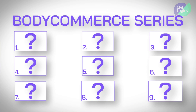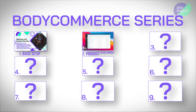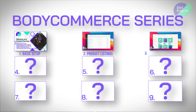First up, it's going to be this overview of the course as well as the setup. Next, we're going to be moving to product listings and displaying our products on our e-commerce store. We're going to be looking at enhancing the user experience by creating custom loops or even using the pre-made loop templates that are built into Divi Body Commerce for you to use.